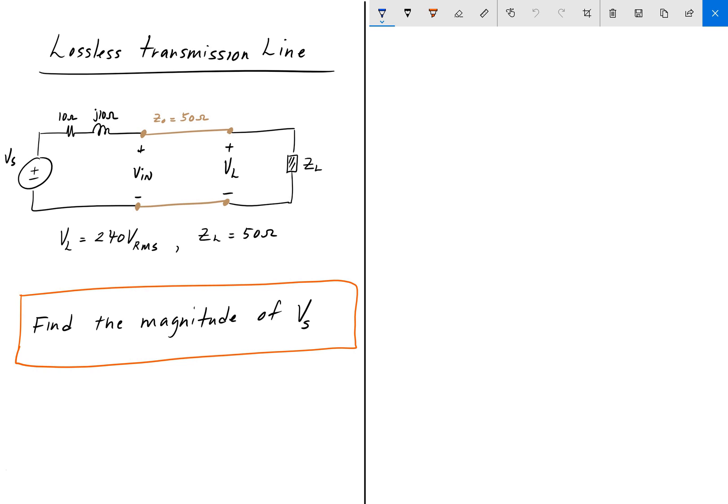To solve this we see that this transmission line is matched, and that means that the impedance of the load is equal to the characteristic impedance of the line. When you have this impedance matching you get that Vin is equal to Vl, and similarly In is equal to Il.